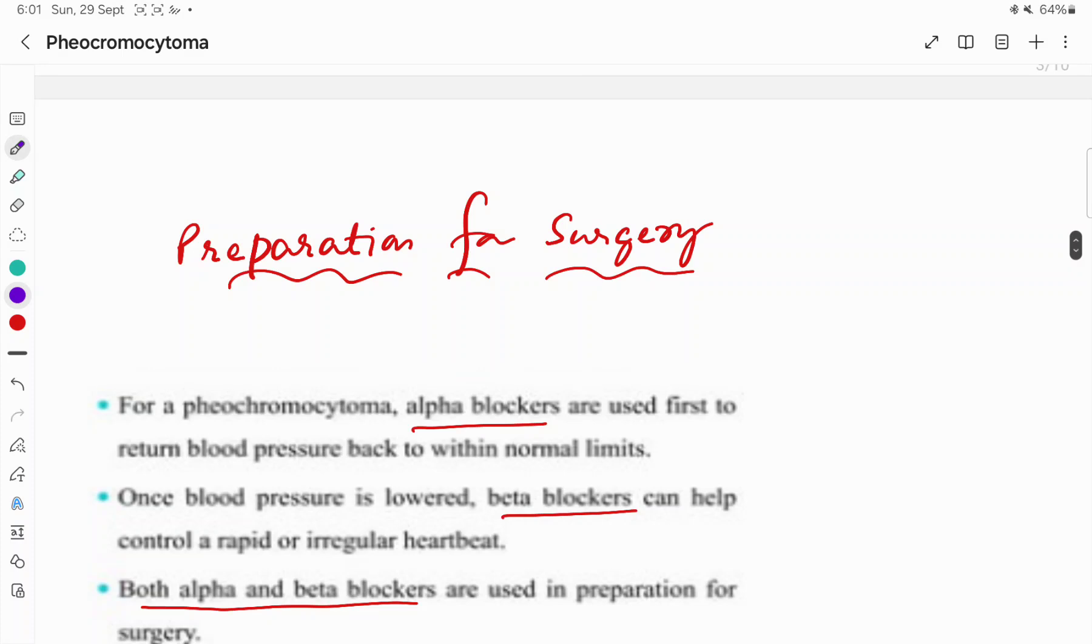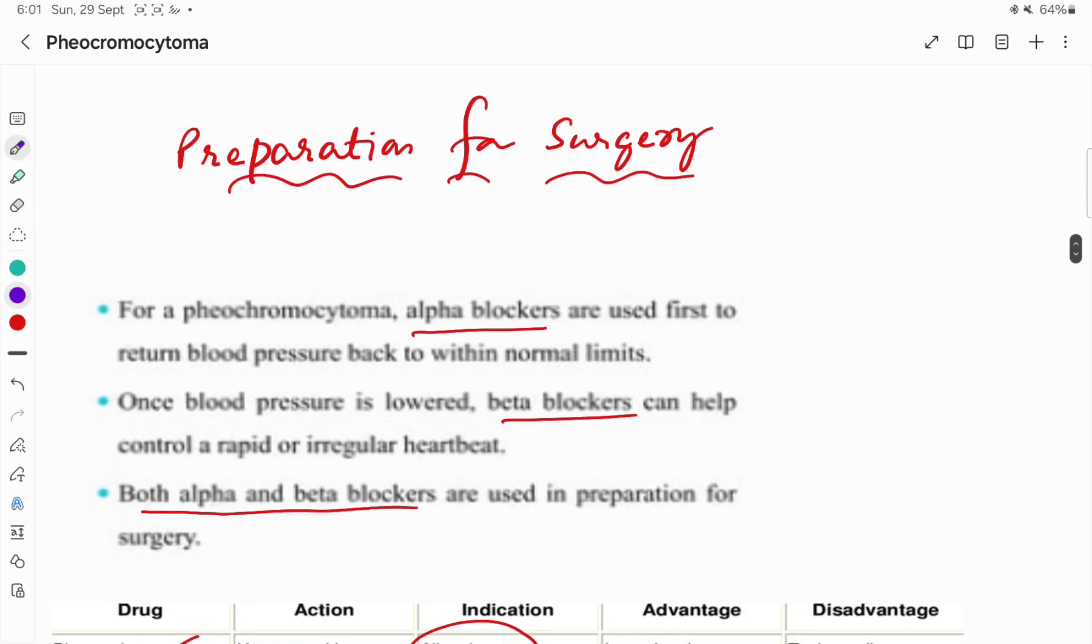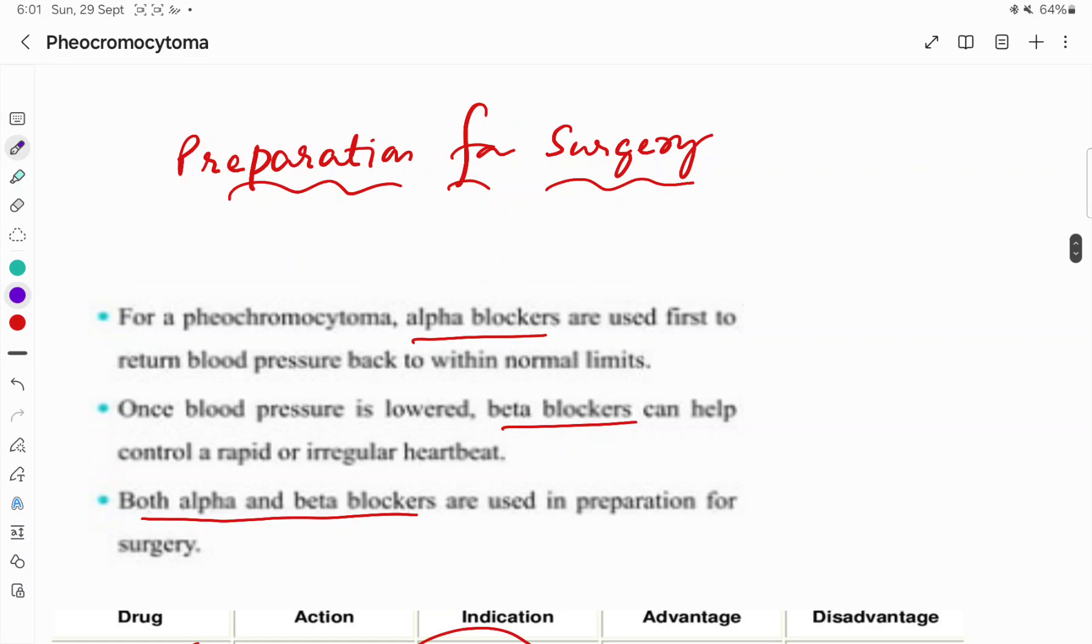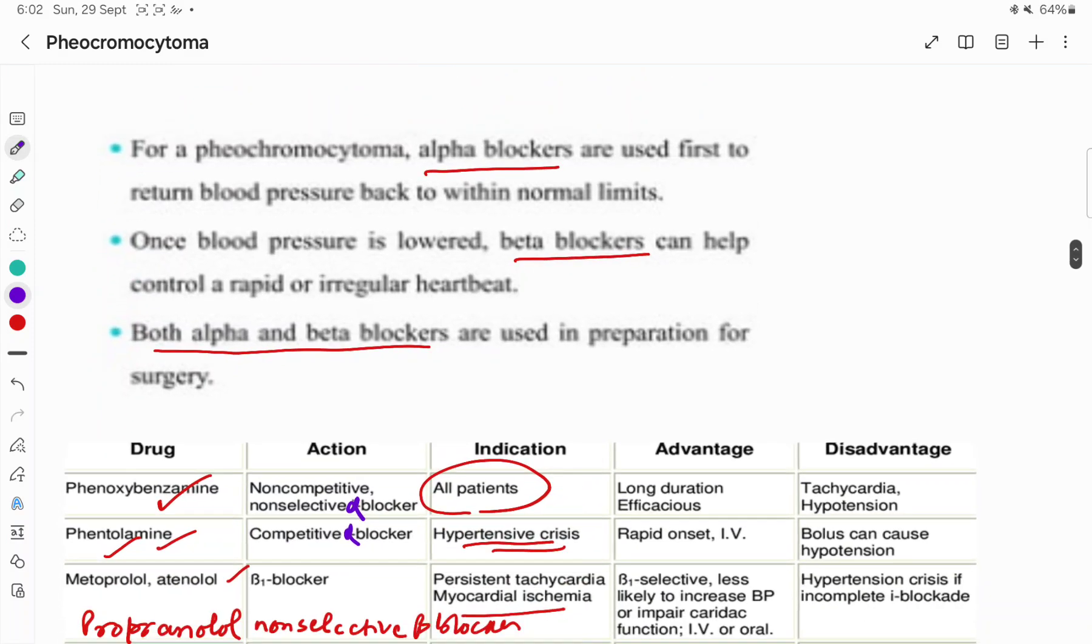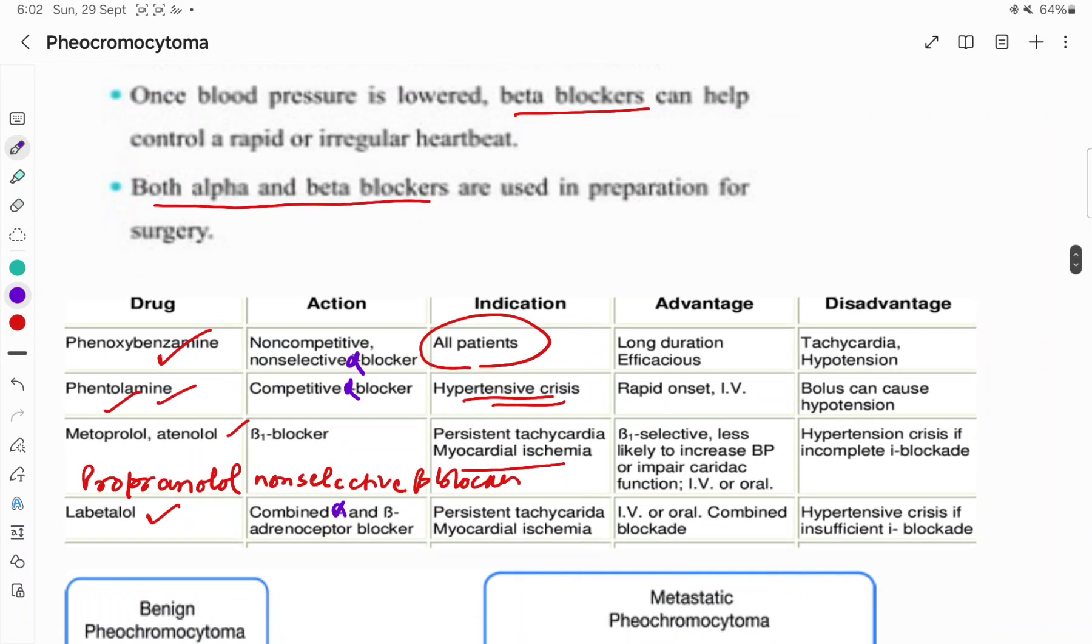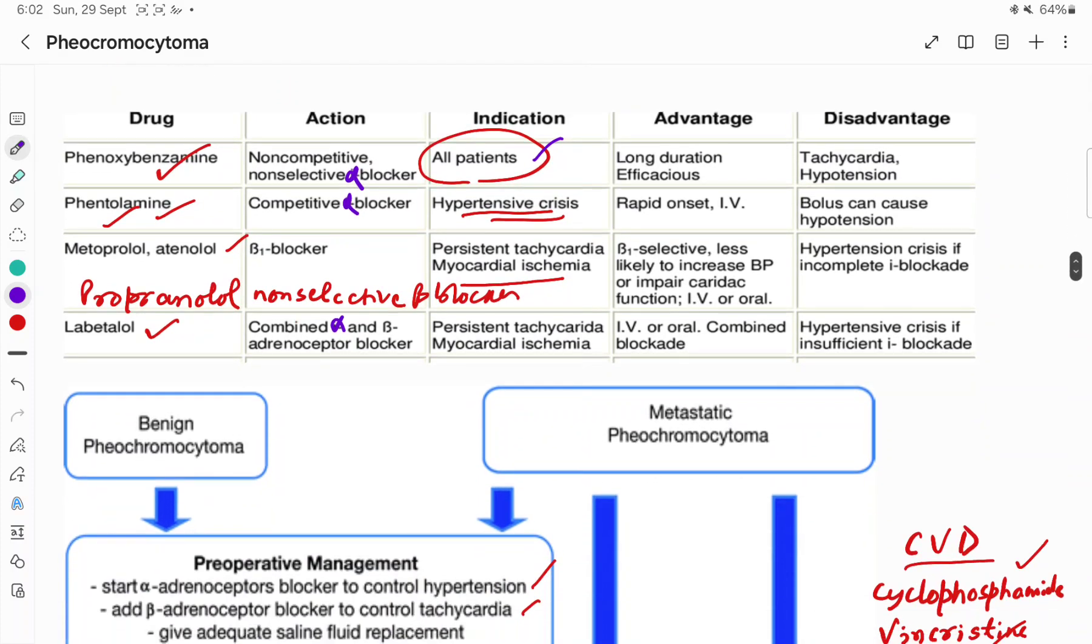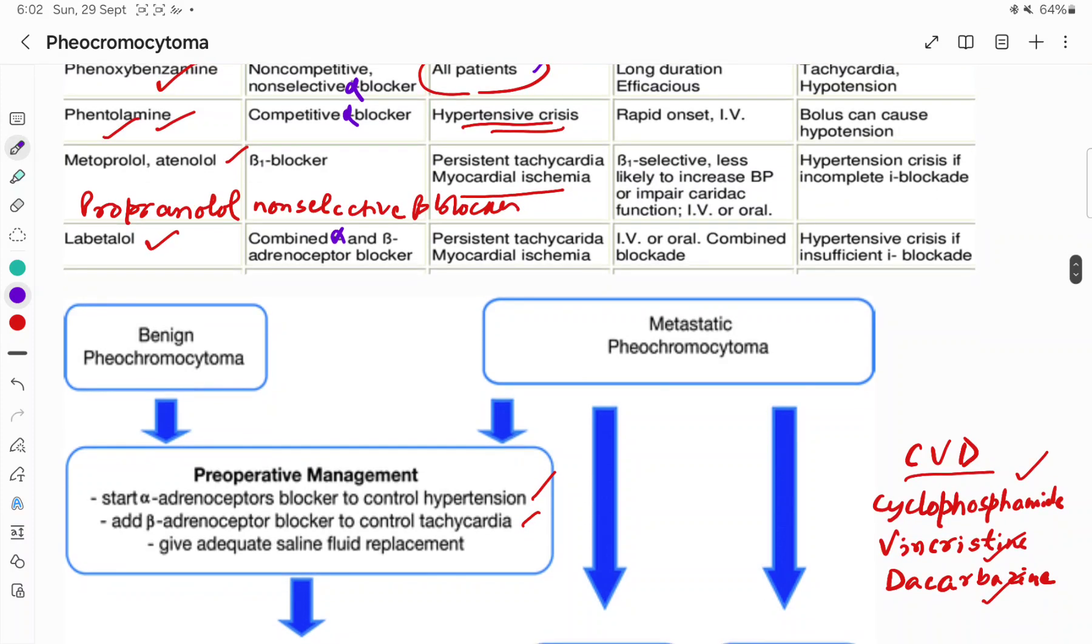Before surgery the blood pressure has to be normalized using alpha blockers, beta blockers, and both alpha and beta blockers. In all patients we can use alpha blockers, and once the blood pressure is normalized, then we can add the beta blockers.